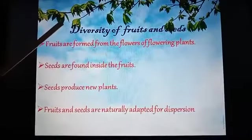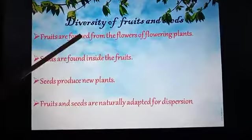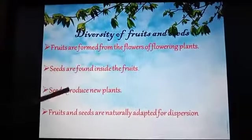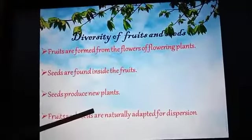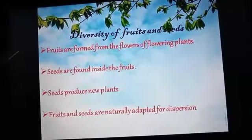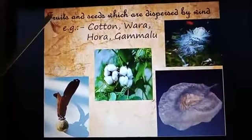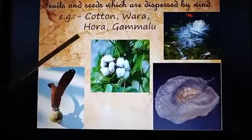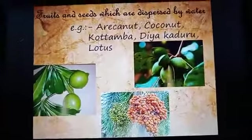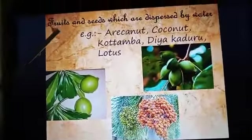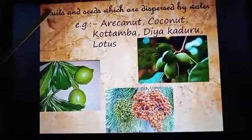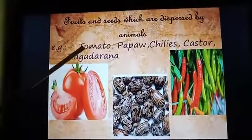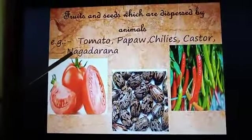Diversity of fruits and seeds. Fruits are found from the flowers of flowering plants; seeds are found inside the fruits; seeds produce new plants. Fruits and seeds are naturally adapted for dispersal. Dispersed by wind: cotton, Vara ore, gum malu. Dispersed by water: areca nut, coconut, kotamba, diyakaduru, and lotus. Dispersed by animals: tomato, papaw, chilis, castor, and nagadaranya.